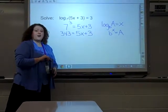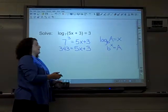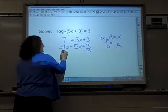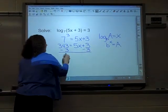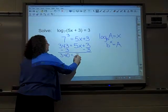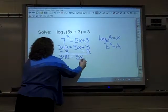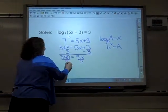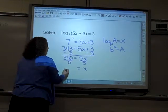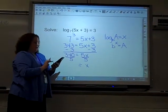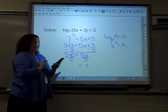Now I have a regular algebra equation that I can solve for x. Subtract 3 from both sides. And 340 is equal to 5 times x. Now divide both sides by 5. And x is equal to 68.